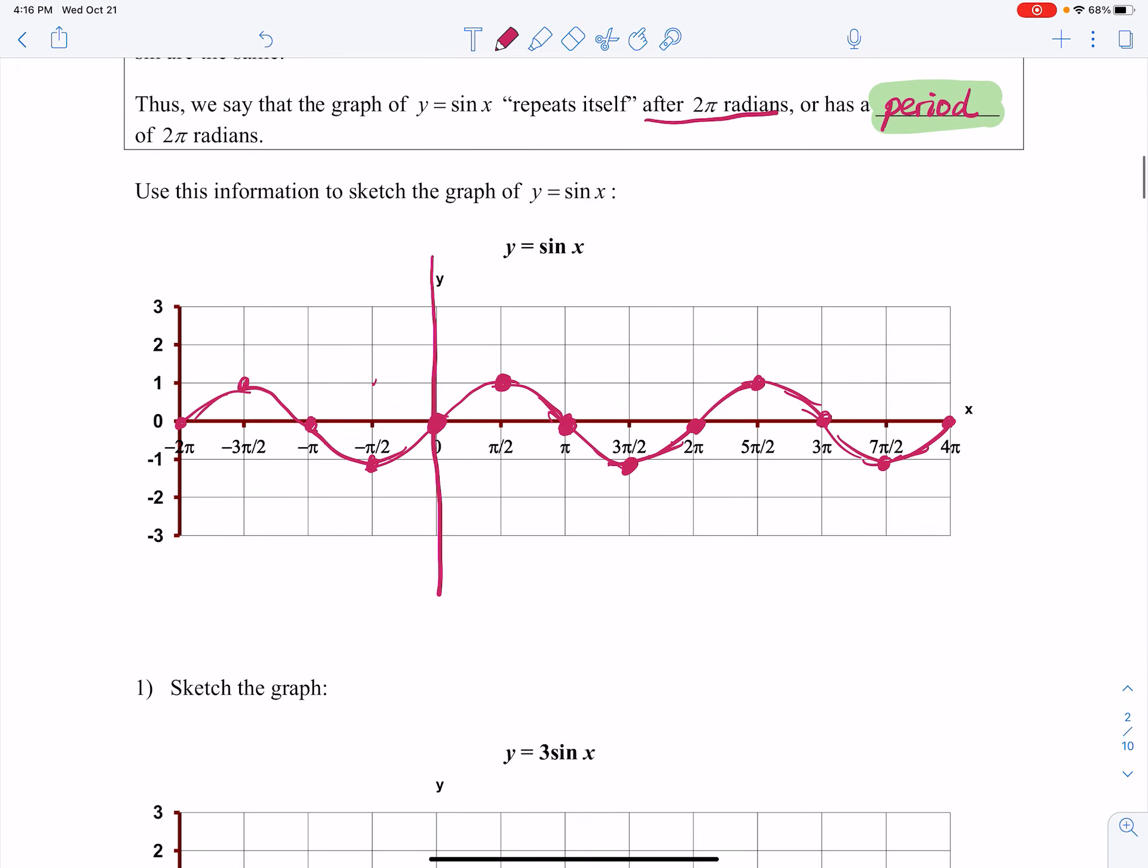So this is what the graph of sine of x looks like. Just notice, maximum point here at 1, minimum point here at negative 1, keeps bouncing back and forth.